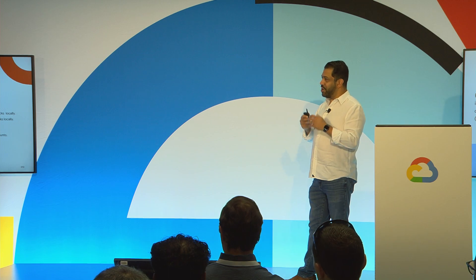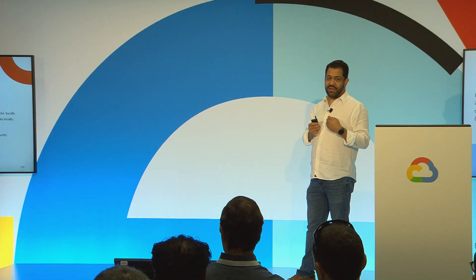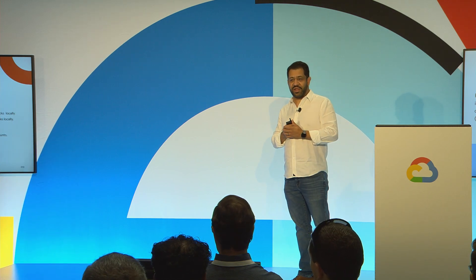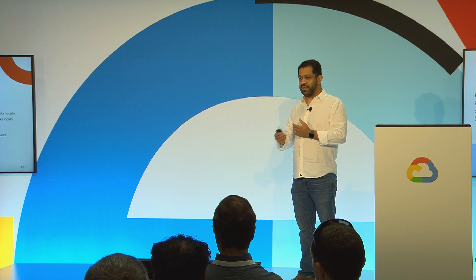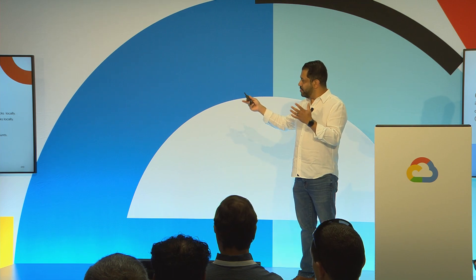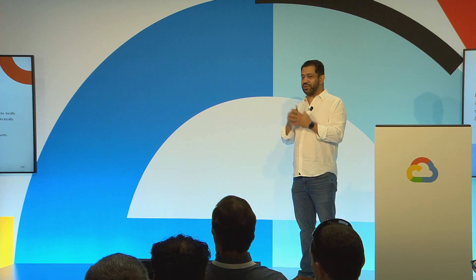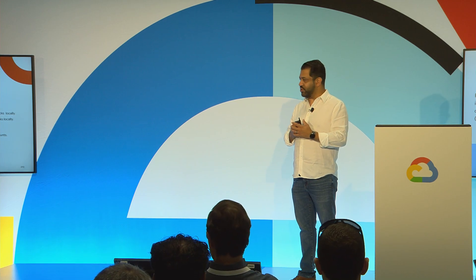If you want to write to the blockchain, you either send Ether, which is the native currency of the Ethereum ecosystem, to another wallet address, or you can interact with a smart contract, which might write data to the blockchain. For any of those use cases, you really need an RPC node, which participates in the network and syncs data with the rest of the blockchain.